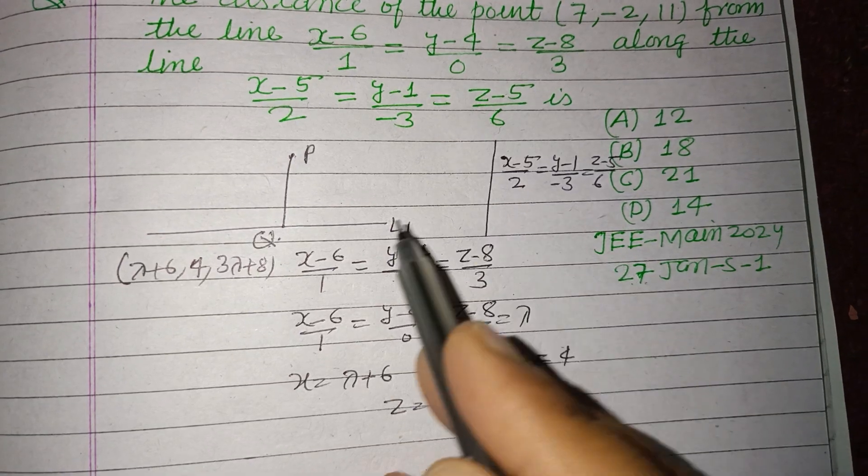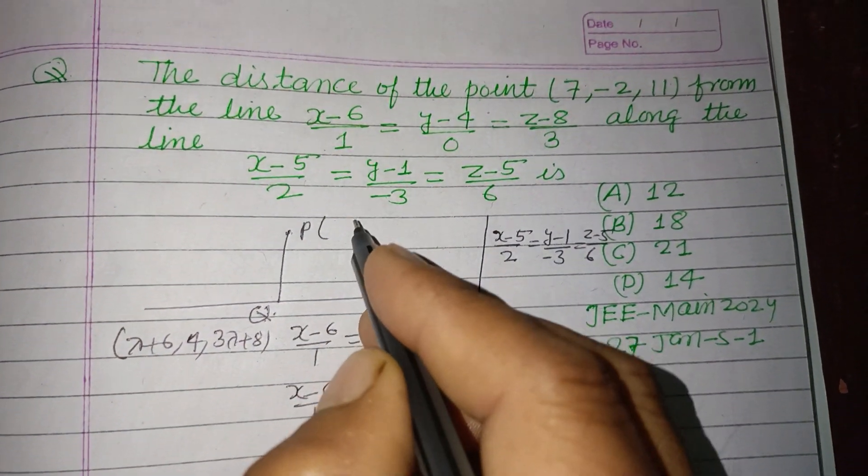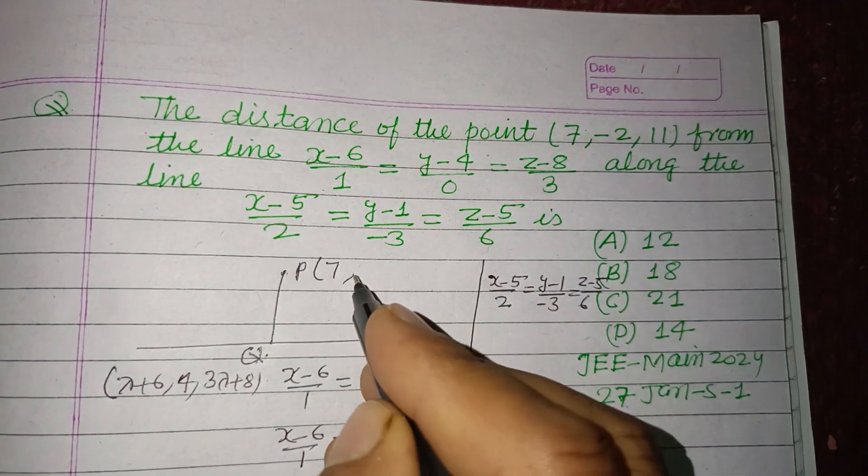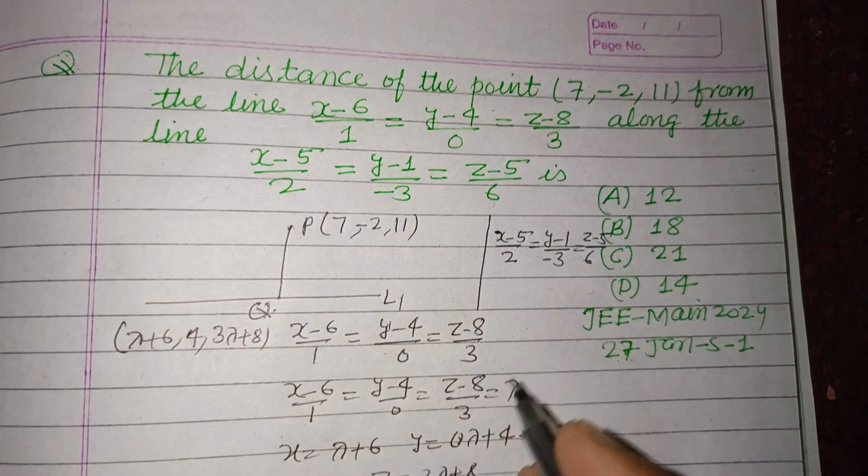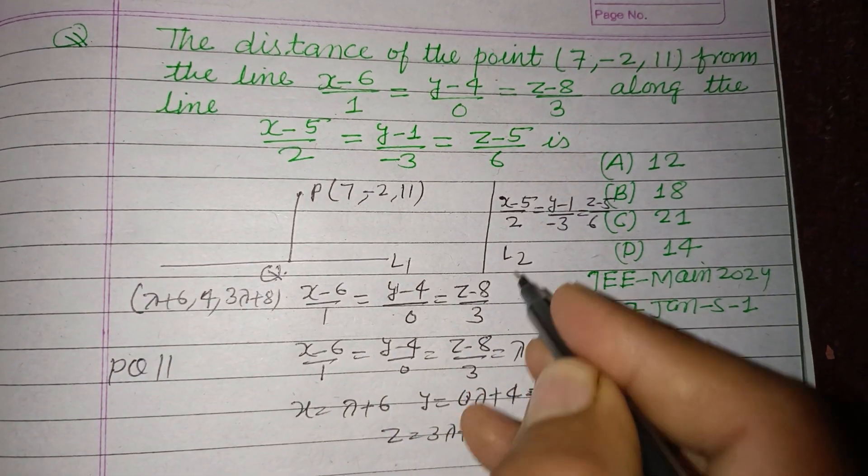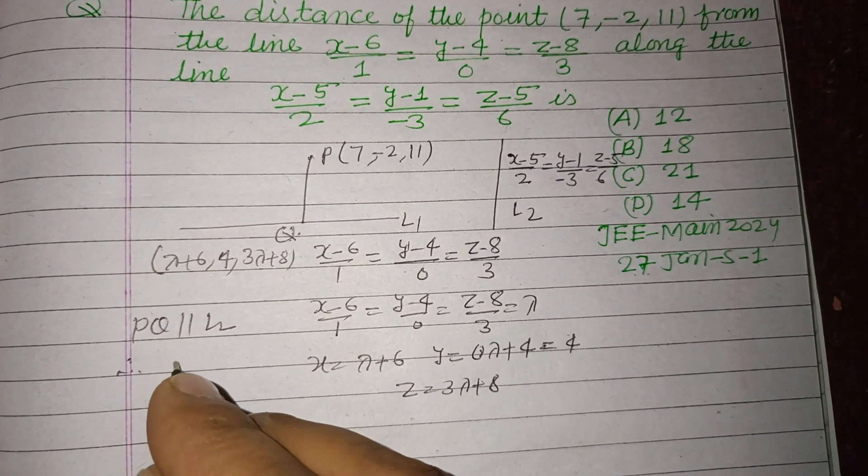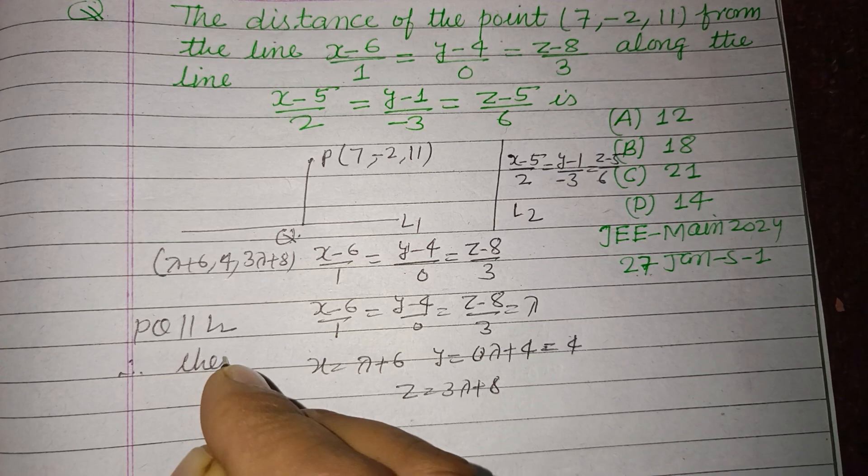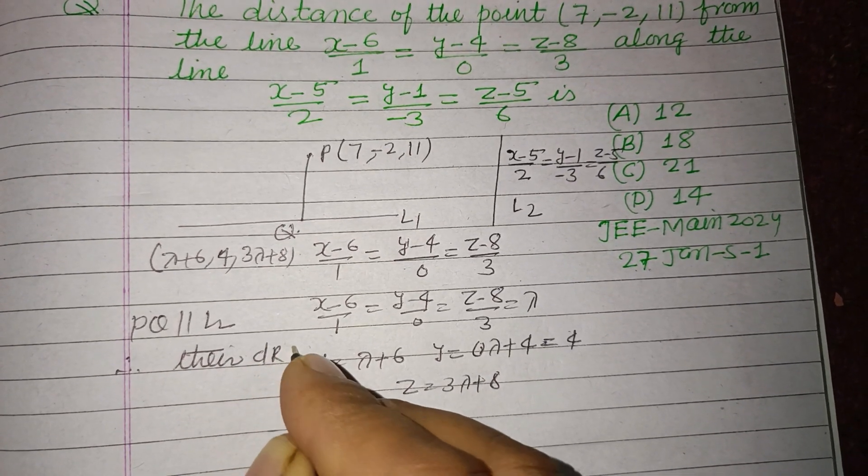This line and this line are parallel to each other. Point P is given to us as (7, -2, 11). So PQ is parallel to line L2. Therefore, their direction ratios are the same. So we take the DRs